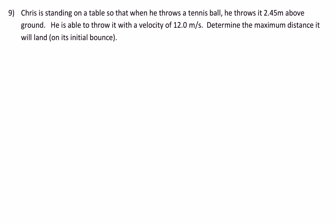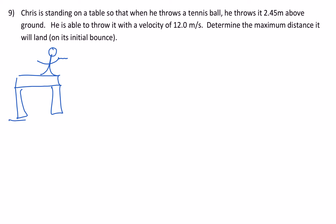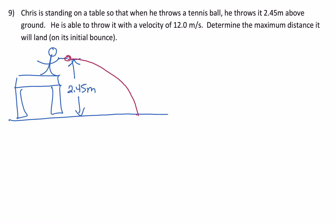Now for the first problem on this worksheet — the one I should have done first but was doing these backwards by accident. Chris is standing on a table so that when he throws a tennis ball, he throws it 2.45 meters above the ground. He's able to throw it at a velocity of 12 meters per second. Determine the distance it will land on its initial bounce from the table. Pause the video and write out your givens and unknowns.